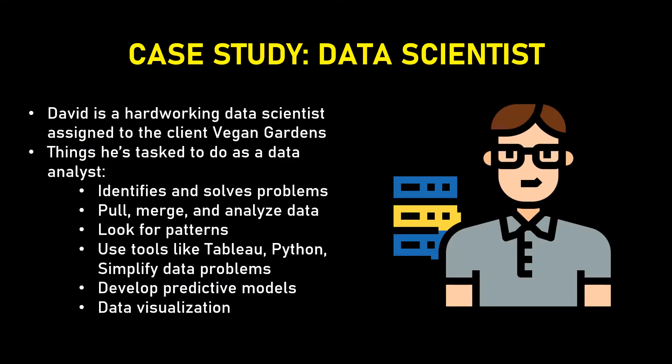David, on the other hand, is a hardworking data scientist who is assigned to the client Weggen Gardens. He deals with understanding the business challenges and opportunities to develop solutions with the use of modern tools and techniques. These tools include statistical methods, data visualization techniques, and machine learning algorithms to build predictive models and solve complex problems. Unlike Mark, David deals with messy and unstructured data to derive meaningful information. However, he also communicates important information and insights to business leaders and stakeholders.